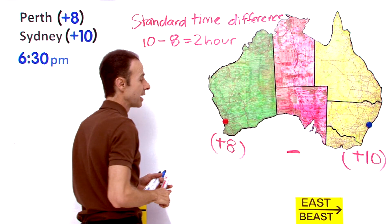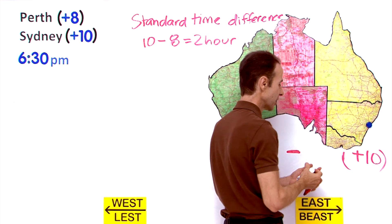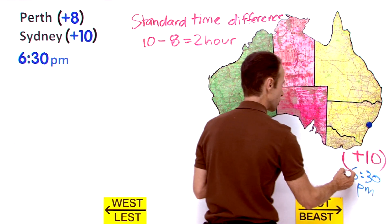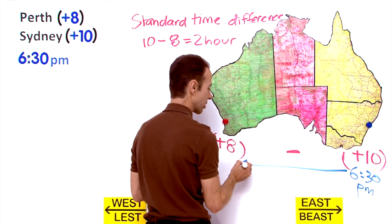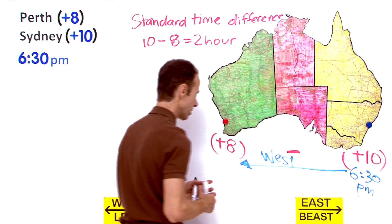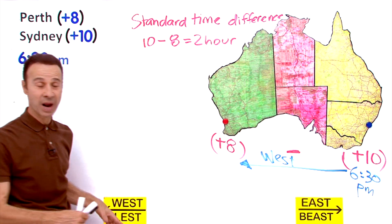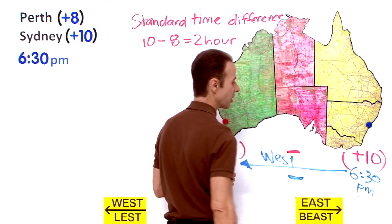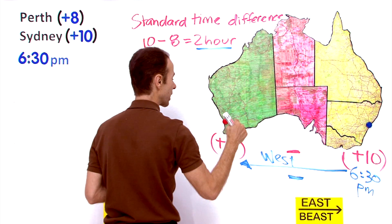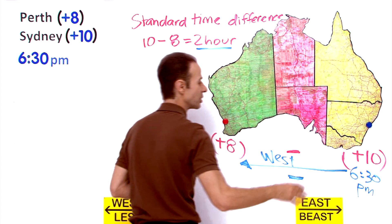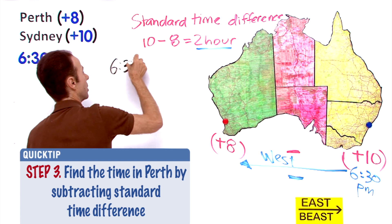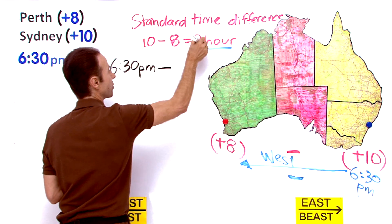Now, going from Sydney where we know it is 6.30pm, we are going to Perth. Which direction are we going? We are going west. West means less, so that means we subtract time. We subtract the standard time difference between the two cities. So to work out what time Joshua needs to call from Perth, we take 6.30pm in Sydney and we subtract the 2 hours.